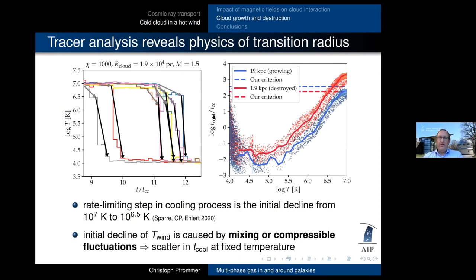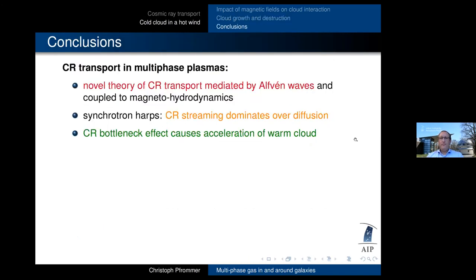Now, this initial decline in temperature is caused by mixing or compressible fluctuations, as we show here. That's the ratio of the cooling time divided by the cloud crushing time as a function of temperature. A small cloud, which is basically being destroyed because the cooling time is longer than predicted by our criterion. A large cloud, shown here in blue, is below this critical line, and therefore it can cool faster. And you can see the scatter here is set really by mixing of the hot wind and by compressible fluctuations.